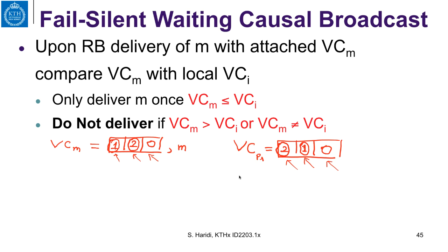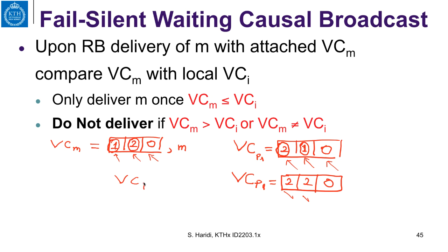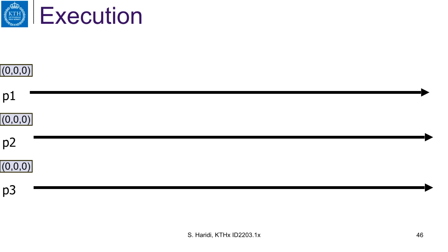But if P1 has the vector clock values 2, 2, and 0, then it knows it has received all messages from P2 as well as its own messages. Therefore, in this case, the vector clock of P1 is greater than or equal to the vector clock associated with message M, and delivery can proceed. Let us now see the execution of the algorithm by example.